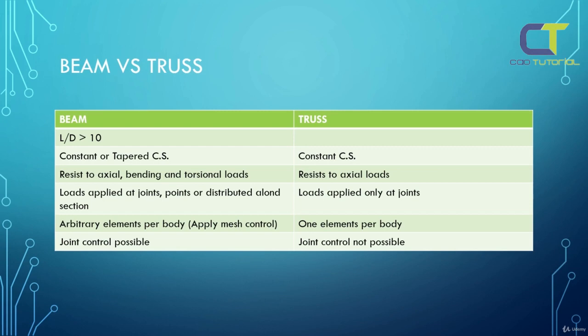While when you treat an object as a truss, we can only apply loads at joints. With beam elements we can create an arbitrary number of elements per body and apply mesh control, while with a truss we only have one element per body. With beam elements, every joint at the beginning and end of the element can be controlled — we can make joints hinged, rigid, and so on — while with trusses we cannot control joints.